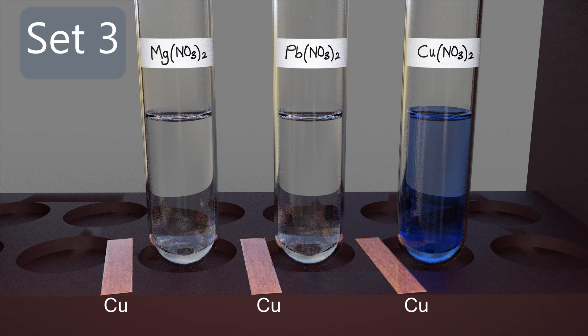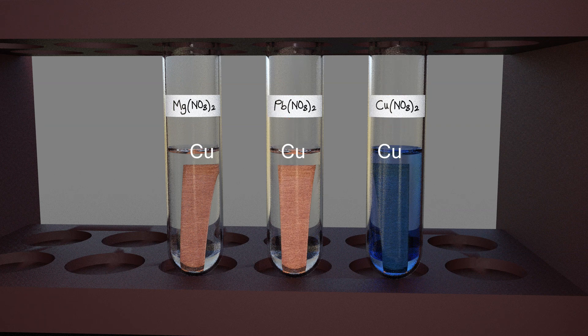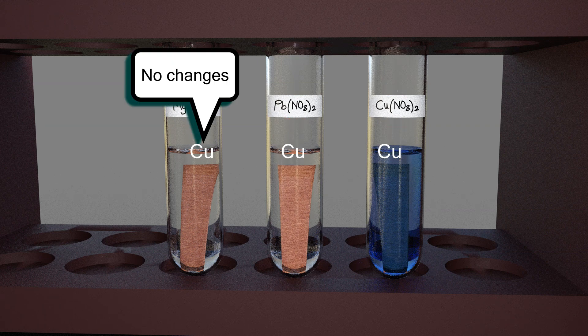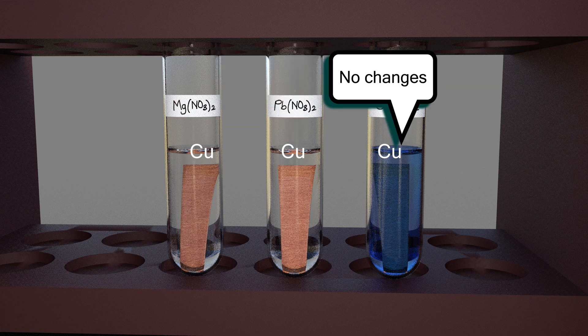Prepare three strips of copper. Add a copper strip into each of the three test tubes of set three and observe for any changes. No changes can be seen in all three test tubes of set three.